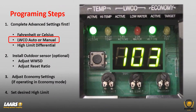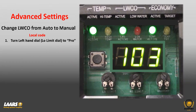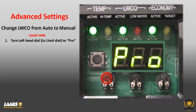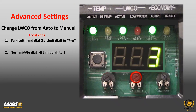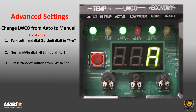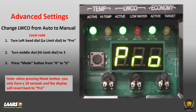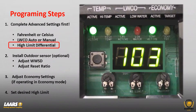To change your low water cutoff from auto reset to manual reset, start with the left-hand dial and make sure you're in PRO for programming. Choose the middle dial and turn it to the number three. Press the mode button once and the letter A will appear for auto; press it a second time and the letter B will appear for manual reset. It will revert back to programming after 10 seconds.